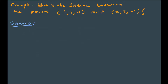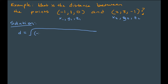It doesn't matter which point we let be P1 and which we let be P2. We'll let the first one be P1 with coordinates X1, Y1, Z1, and the second point be X2, Y2, Z2. Then the distance D is the square root of (negative 1 minus 2) squared, plus (1 minus 3) squared, plus (0 minus negative 1) squared.